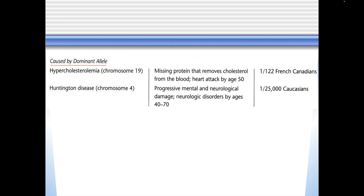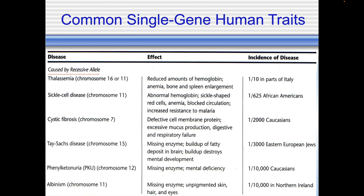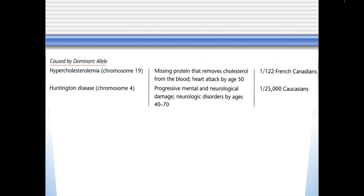The diseases listed previously are caused by a recessive allele, so you would need two of these alleles to be affected. But hypercholesterolemia and Huntington's are caused by a dominant allele — so if you got even one of these alleles from a parent, that would be a bad deal.